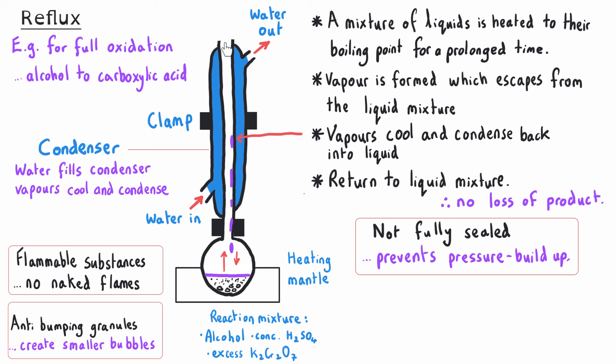We don't seal our condenser at the top, but it is really important that there are no gaps further down the apparatus, because if there were gaps, some of our vapors could escape. This could be dangerous and would certainly reduce our yield.